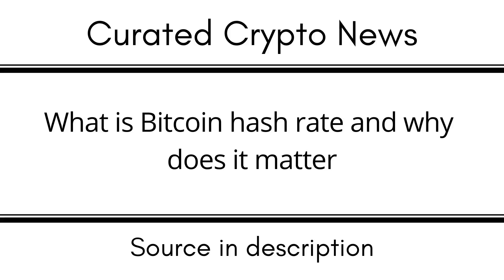The network hash rate increases when mining equipment is upgraded, or vice versa. Because the network is designed to release a specific quantity of Bitcoin at a time, a more robust network does not necessarily lead to BTC being mined more quickly. The number of miners, mining difficulty, and ultimately miner profitability are all impacted by changes in hashing power. The mining challenge rises when more miners join the network, because it takes more guesses per second to solve the complex mathematical equation and get the block reward.